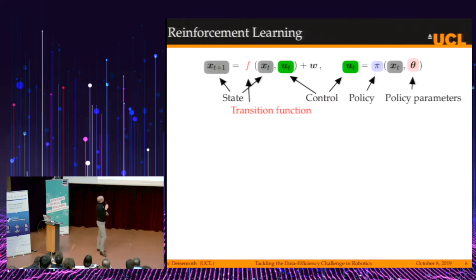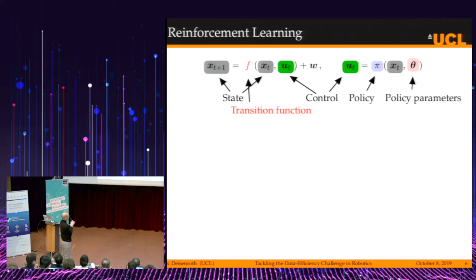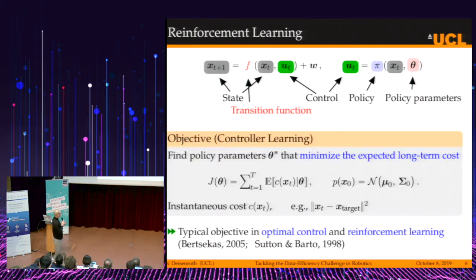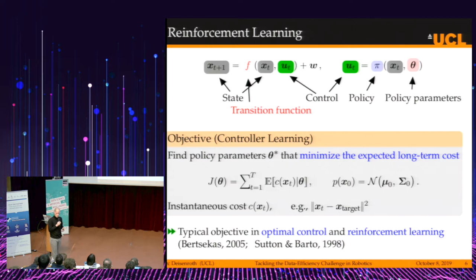Here is the setting we are going to talk about. We have a state of the system at time step t+1, which is a function of the state at time step t and a control signal at time step t, plus some additive noise. The control signal itself is a function of the state and some parameters called policy parameters, and the function pi is called a policy.